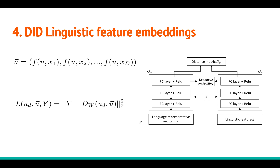Now coming to the linguistic feature-based embedding. We have two models: one working solely with acoustic features and one with linguistic features. The acoustic model is a simple CNN with softmax. For the linguistic features, they use a CMS network — a Siamese-style network with shared weights between two streams.